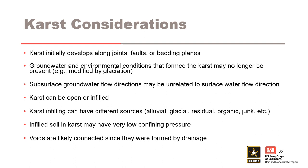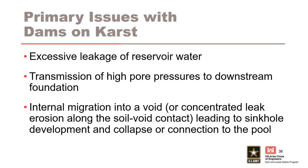There are three primary issues with dams on karst. The first is excessive leakage of the reservoir water. The second is transmission of high pore pressures to the downstream foundation. And the third is internal migration into a void, or concentrated leak erosion along the soil-void contact, that leads to sinkhole development or collapse or connection to the pool.